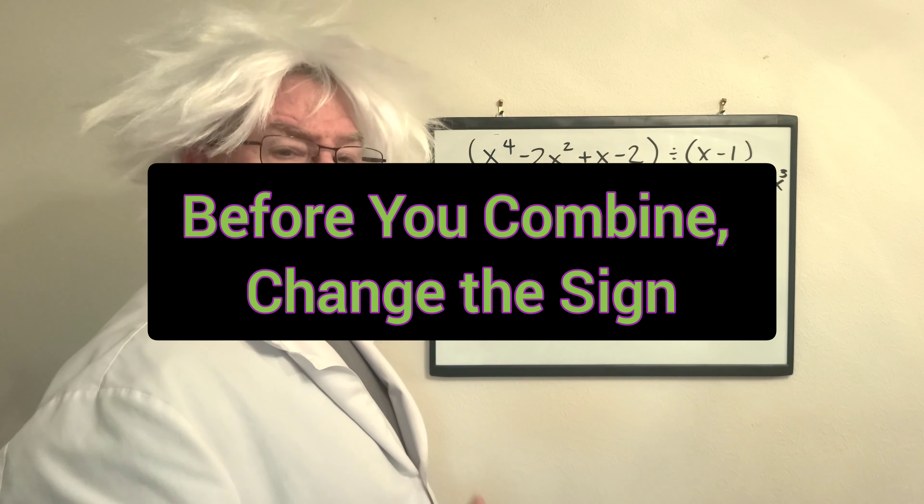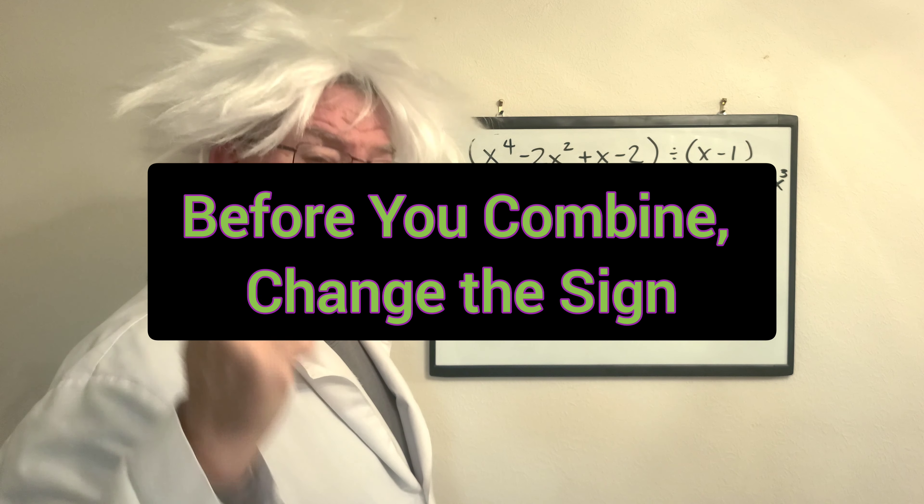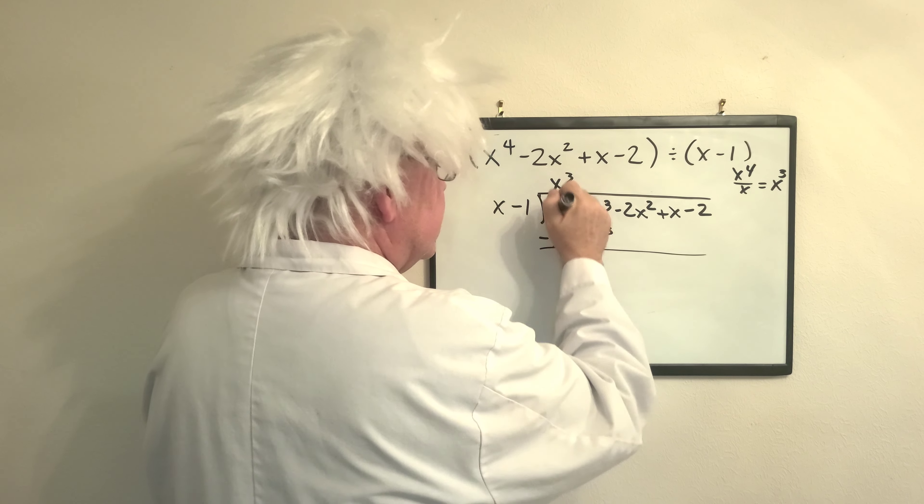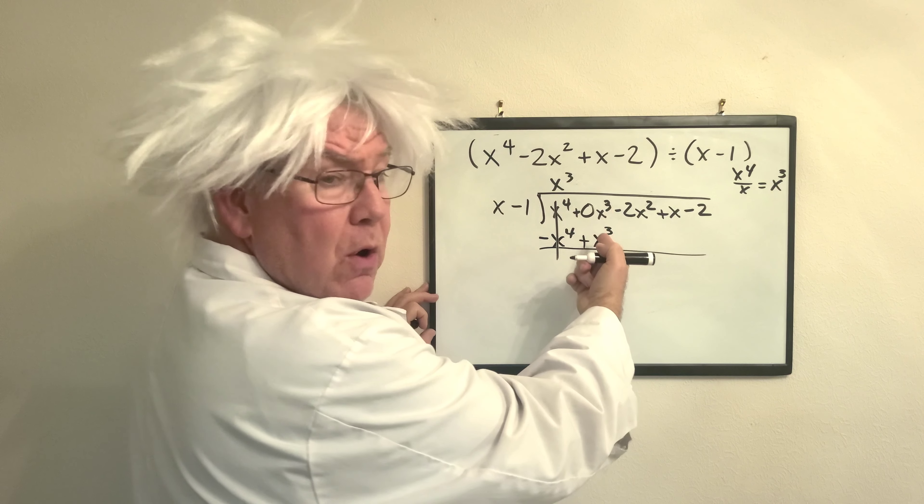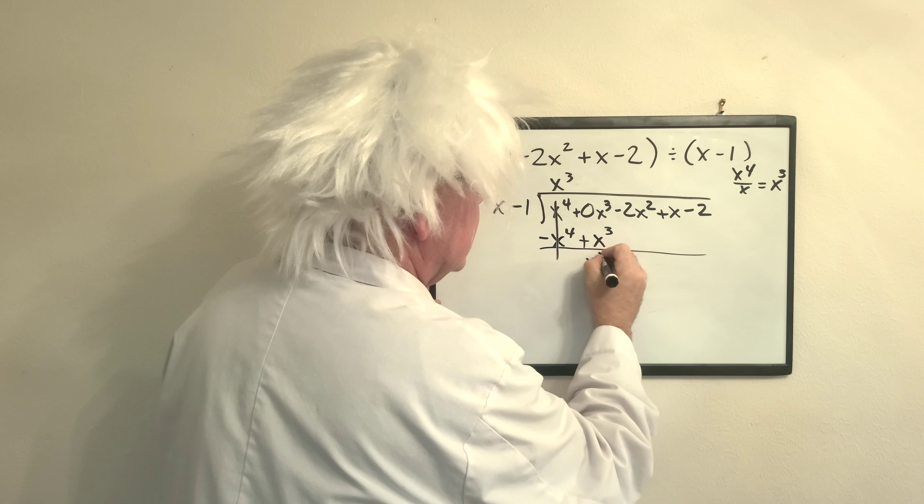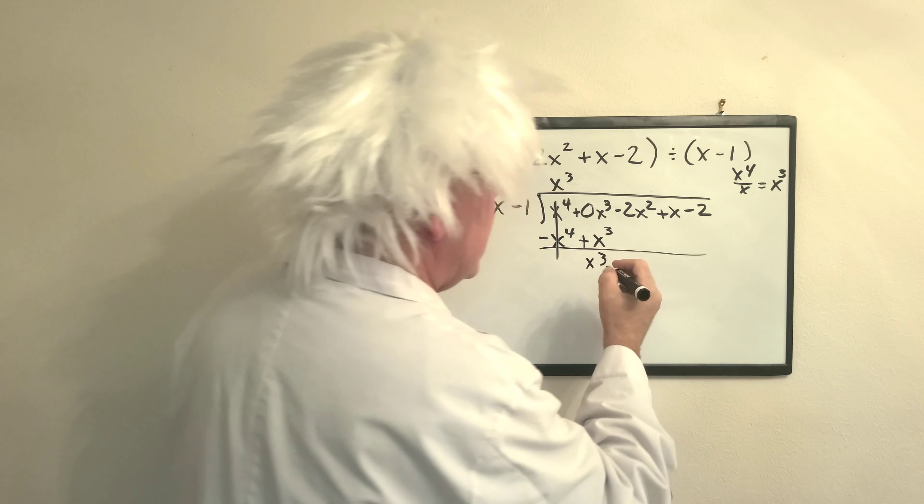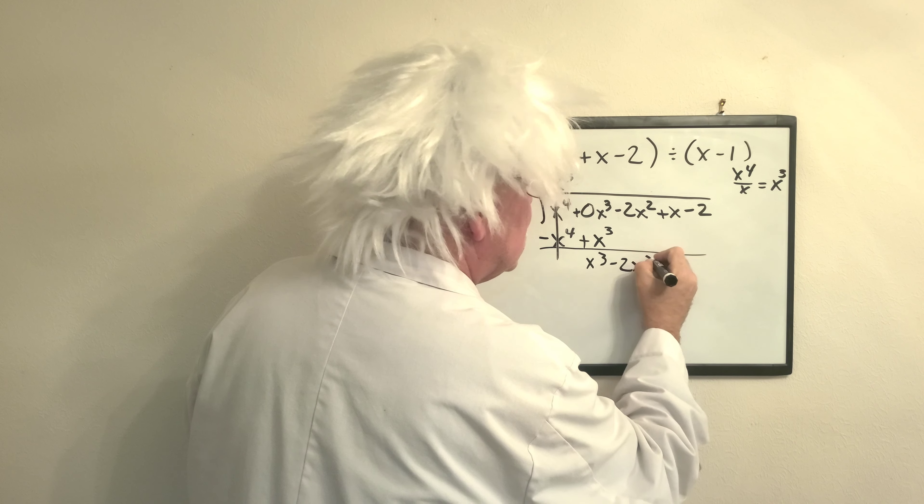Now remember from the other video, before we combine, we must change the sign. So this goes and this goes. Now this goes away. So it's 0 plus x cubed is x cubed. Now we bring down the next term and we start it all over again.